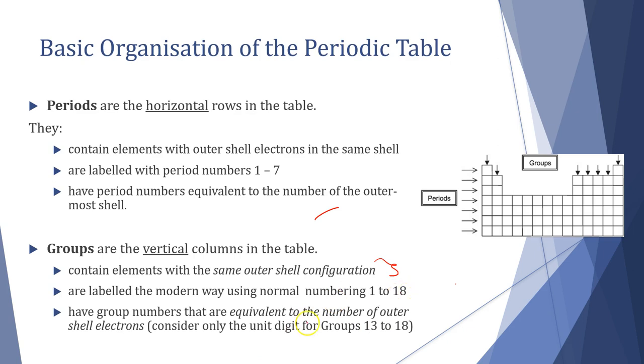The group numbers are equivalent to the number of outer shell electrons, only the digit for groups 13 to 18. So in group 1 and group 2 they have one and two outer shell electrons respectively, we skip over the transition metals, then three outer shell electrons, four, five, six, seven, eight across the way - eight being our noble gases.